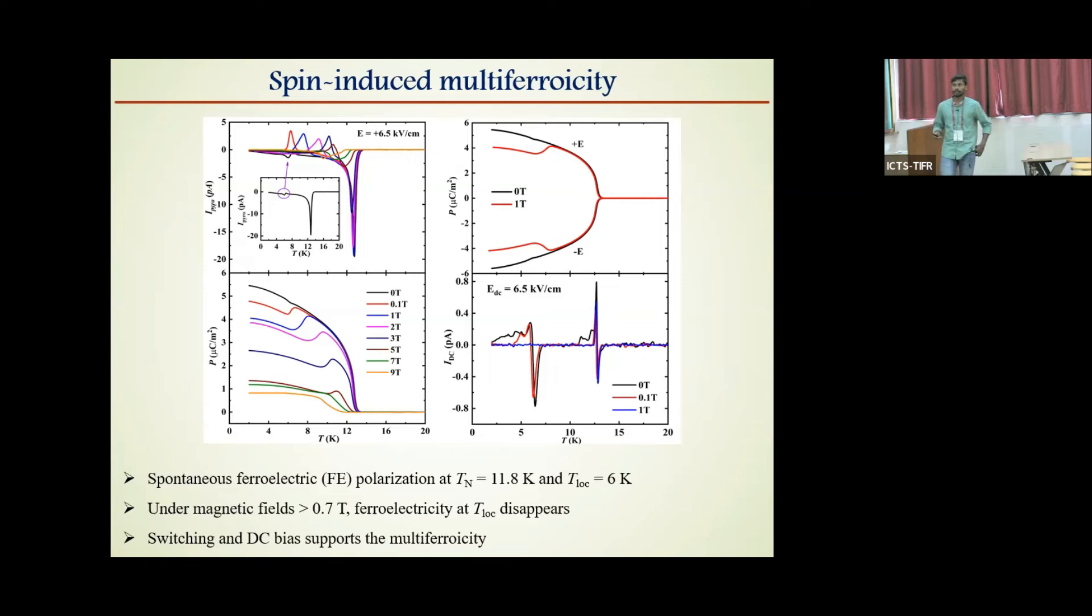With increasing magnetic field, the pyrocurrent peak at T lock-in transition disappeared and started appearing in opposite direction. And we think with further increasing magnetic field, it increased towards the high temperature side. So what does that mean? The magnetic structure below T lock-in transition which is allowing ferroelectricity initially is changed above 0.7 tesla and does not allow ferroelectricity anymore, which appeared as an opposite pyrocurrent peak. And further, the switching behavior of the observed polarization and the DC bias current measurements further support the intrinsic nature of the observed ferroelectricity. So our experimental results confirm that this compound Gd2BaCuO5 is type 2 multiferroic.